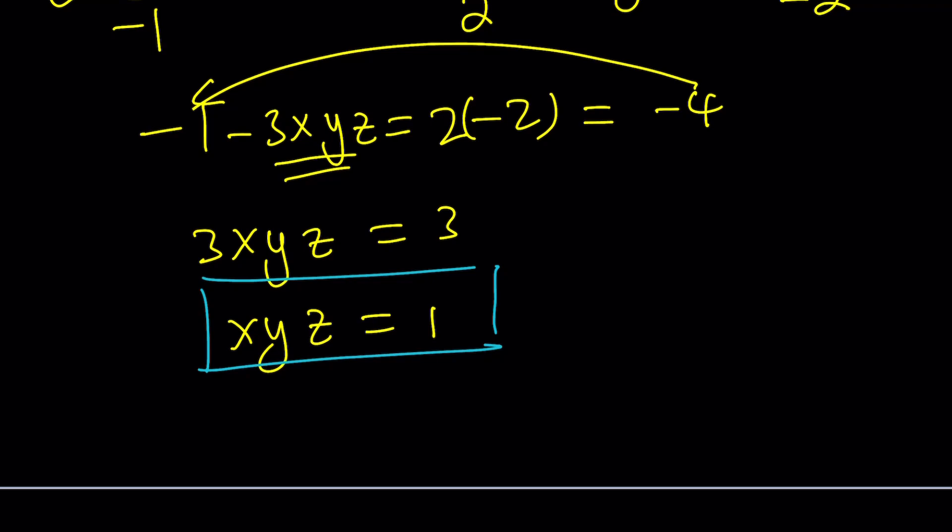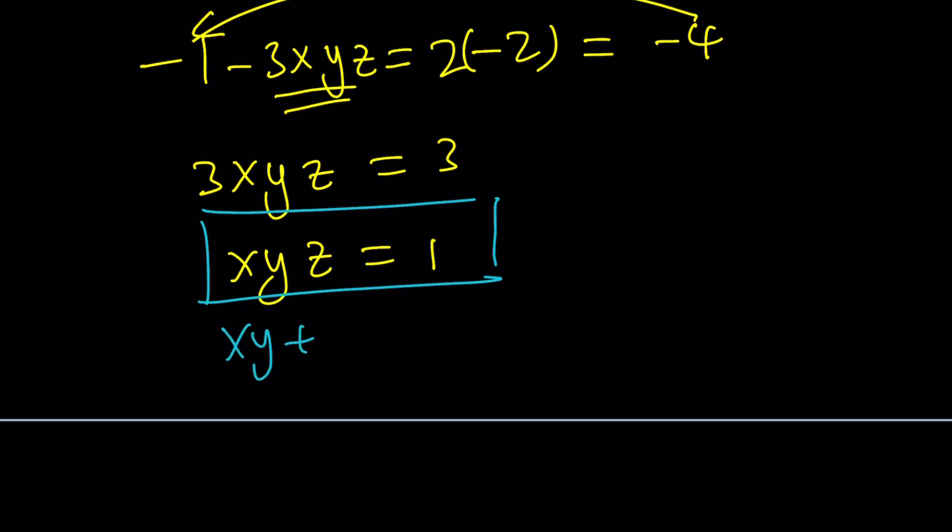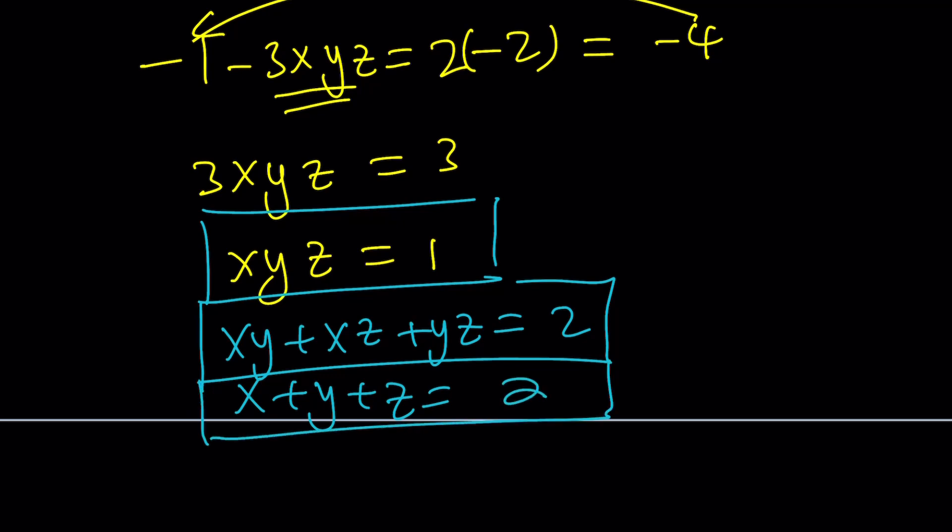At this point, here's what you would like to do, or I would like you to do, hopefully. We have this. We have that. Right? And this is equal to 2, I think. And we also have x + y + z. So what does this tell you? If you say Vieta's formulas, that's good. If not, then let's talk about it.